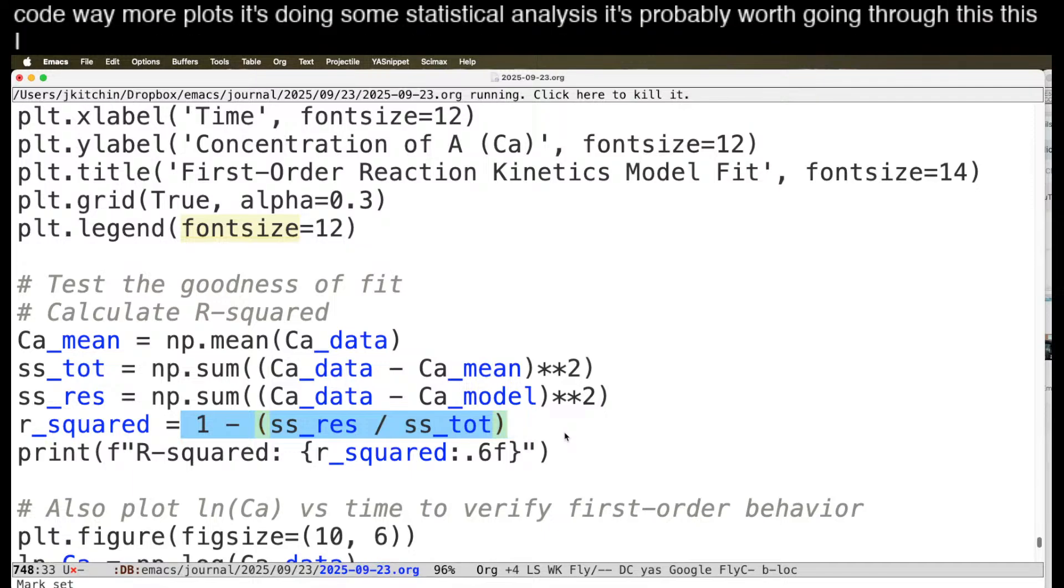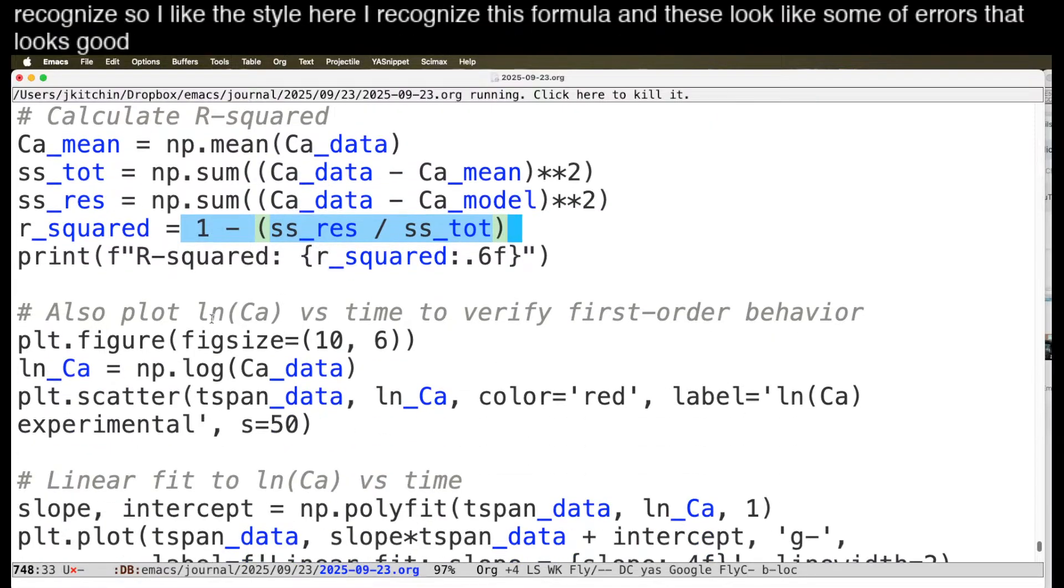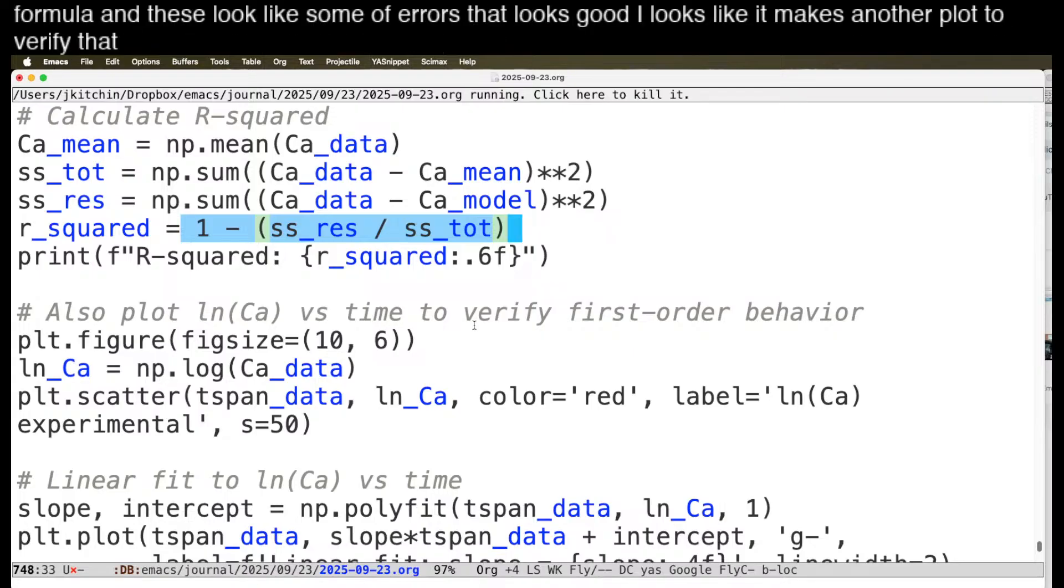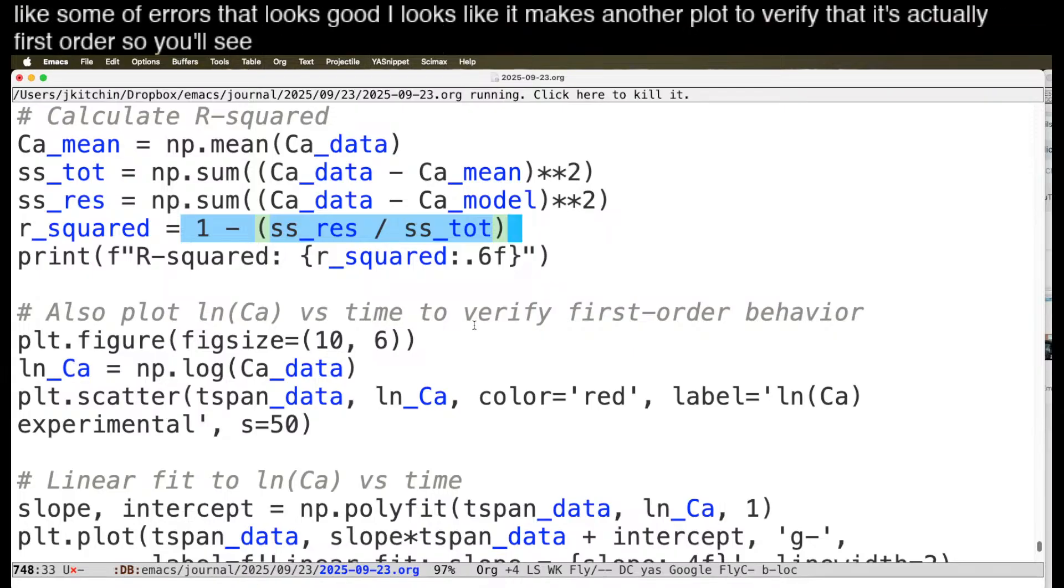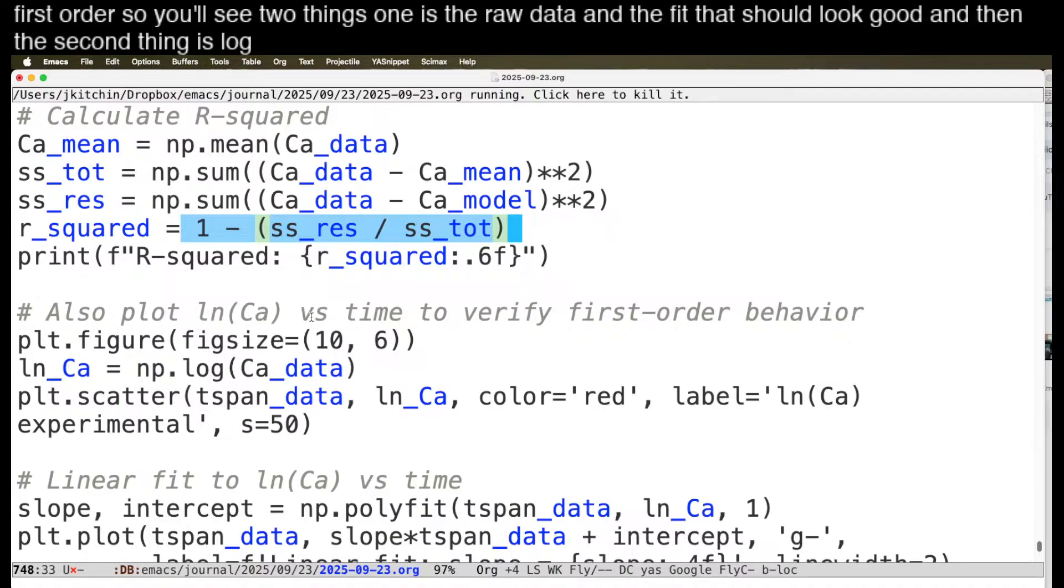It's probably worth going through this. This I recognize. So I like the style here. I recognize this formula and these look like some of errors that looks good. It looks like it makes another plot to verify that it's actually first order. So you'll see two things. One is the raw data and the fit. That should look good. And then the second thing is log ca versus time. That should be linear.